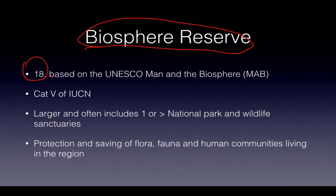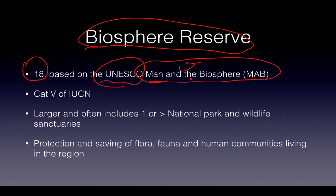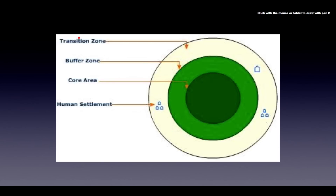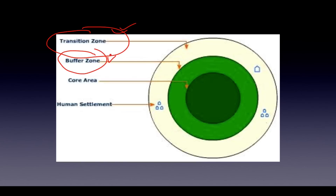Biosphere Reserves — there are 18 in India — are based on UNESCO's Man and the Biosphere (MAB) Programme, launched in the late 70s and 80s. They belong to IUCN Category 5, are extremely large in area, and often include one or more national parks or wildlife sanctuaries within themselves. Their aim is the protection and saving of flora, fauna, and human communities — unlike Project Tiger which only protects tigers. The transition zone allows human settlement; the buffer zone has restricted activity; and the core area is only for scientists for restoration purposes.